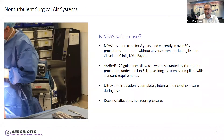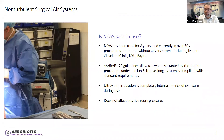Are non-turbulent surgical air systems safe to use? The Alluvia system has been in use for over eight years and is currently used in over 30,000 procedures per month without a single adverse event reported, including at industry leaders such as Cleveland Clinic, NYU Langone, and Baylor. ASHRAE 170 guidelines allow the use of this type of system when warranted by staff or procedure under ASHRAE 170 Section 8.10, as long as the room is otherwise compliant with standard requirements.